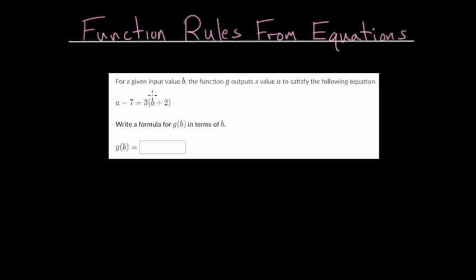For this problem, we're given this equation with both a and b, and we're asked to write a formula for g(b) in terms of b. So our function will be in terms of b and we'll call our function g. These can be a little bit tricky since it might be misleading on which variable you want to solve for.